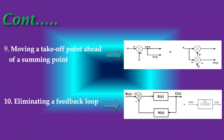Moving a take-off point ahead of a summing point: The signal is X plus Y, so the output is X plus Y. When the take-off point moves before the summing point, the signals are X and Y separately. If a summing point is added, the result is X plus Y — the same signal.